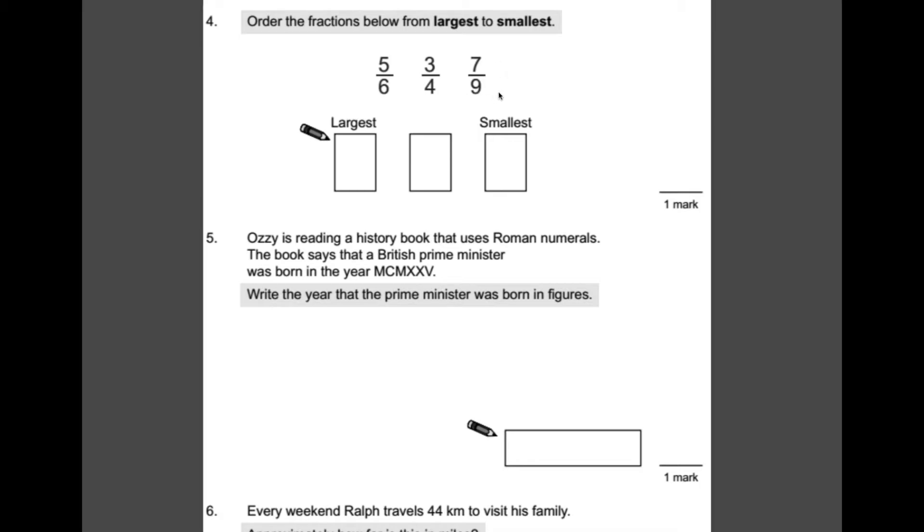Let's go about turning them into 36ths. If I want to turn 6 into 36, I need to multiply it by 6. So, the top and the bottom. 5 times 6 is 30. So, it would be 30 over 36. I want to turn quarters into 36ths. So, I need to times that by 9. 3 times 9 is 27. 4 times 9 is 36. And finally, I need to multiply this by something to turn it to 36. And the answer would be 4. So, multiply the top by 4. 7 times 4 is 28. And 9 times 4 is 36.